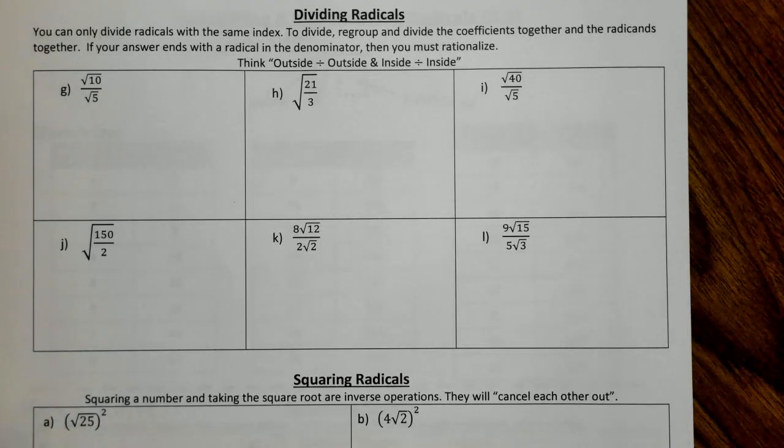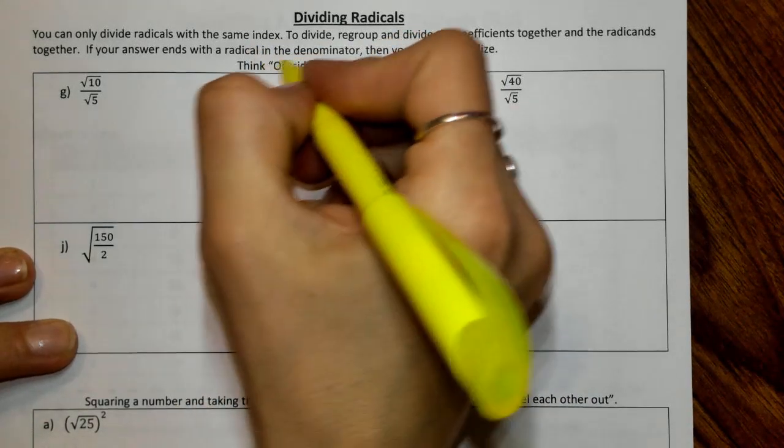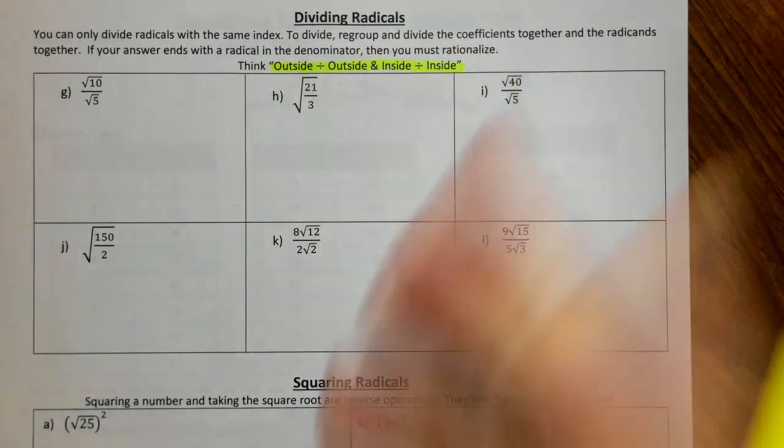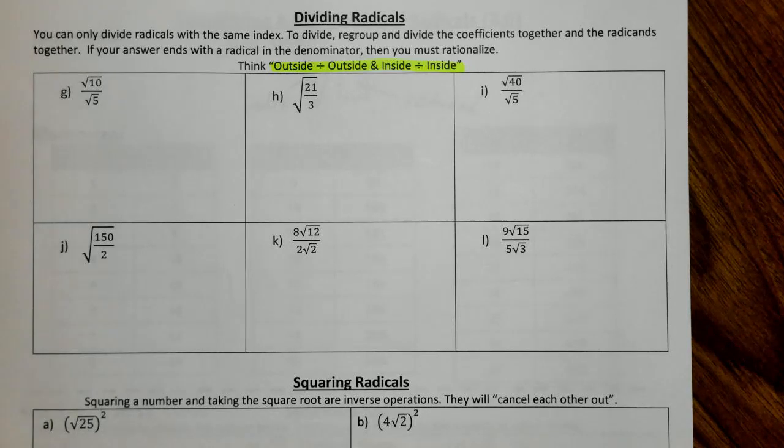Alright, how do we divide radicals? When we're dividing radicals just like with multiplying, you need to think outside divided by outside, inside divided by inside. It's like terms.